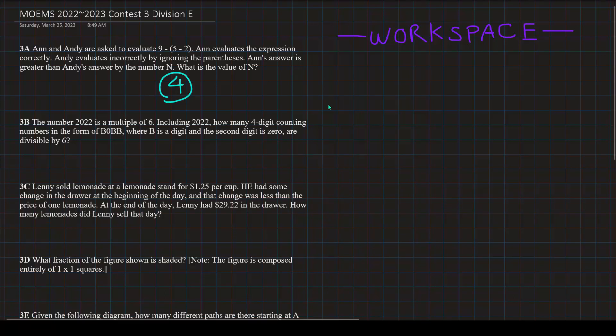Now let's do the second problem. The number 2022 is a multiple of 6. Including 2022, how many 4-digit counting numbers in the form of B0BB, where B is a digit and the second digit is 0, are divisible by 6?